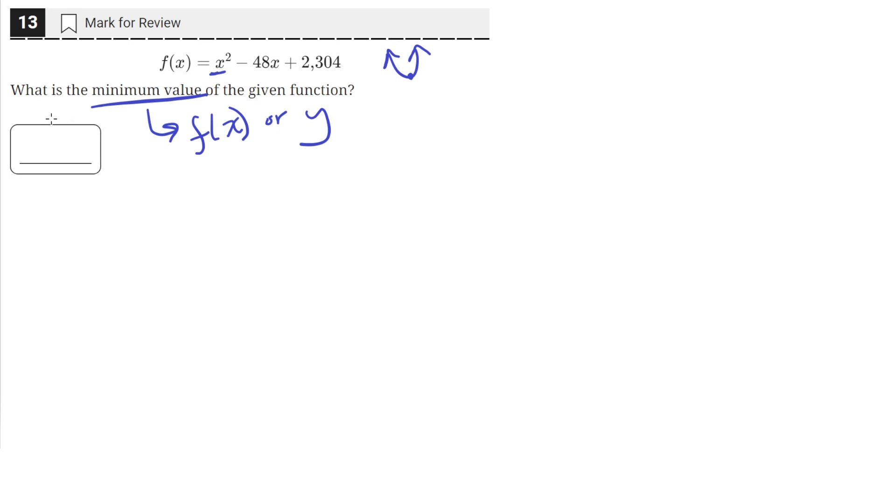By minimum value they just mean the value of f of x or value of y on the y-axis, so the smallest value of f of x on this quadratic function. We could find this by finding the x value of the vertex.